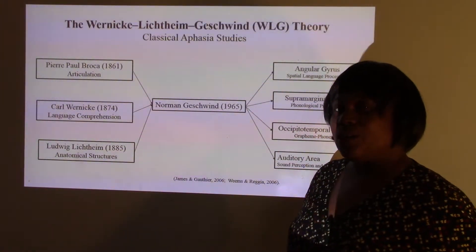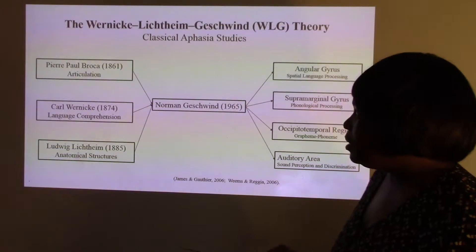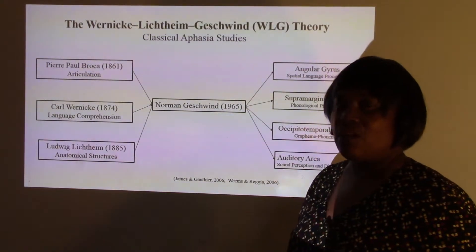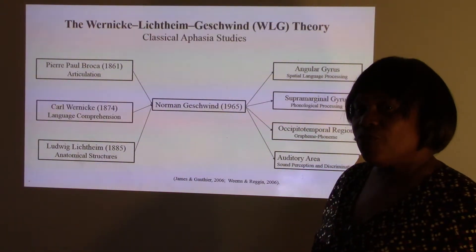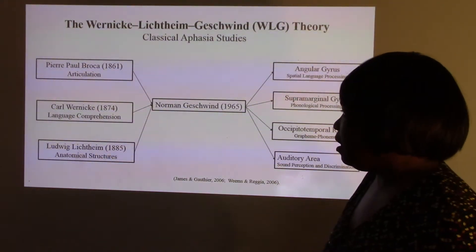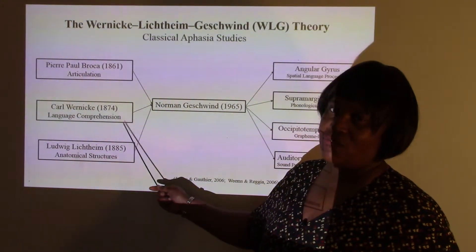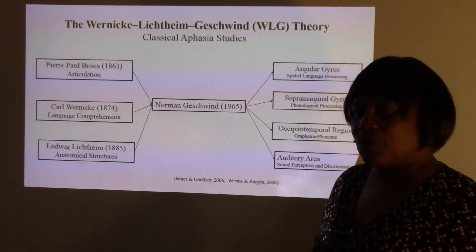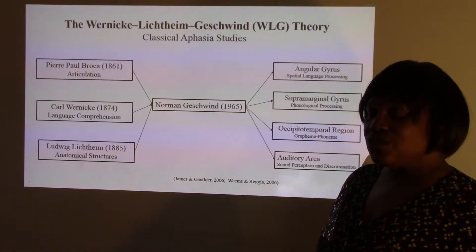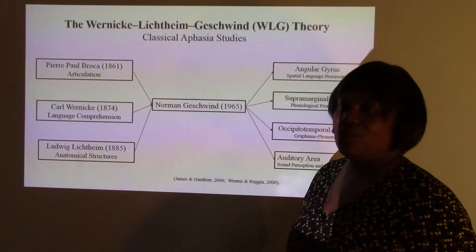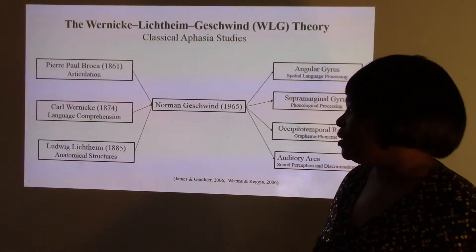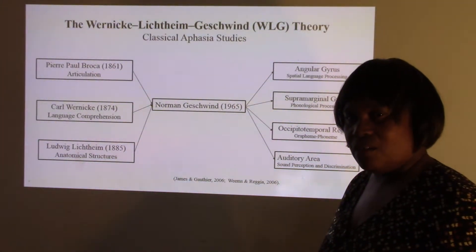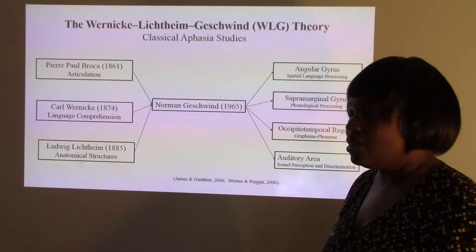I will also include Paul Pierre Broca because Broca did work in 1861 and he located the area of the brain responsible for articulation. In 1874 Carl Wernicke located the area responsible for language comprehension, and a decade later Ludwig Lichtheim did work and located anatomical areas in the brain associated with language learning.